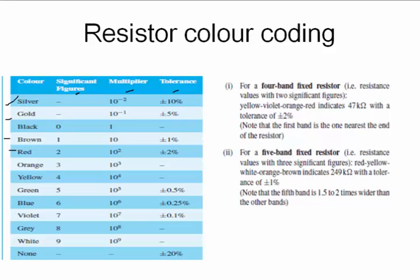If you have a 4 band resistor, yellow, violet, orange, red. Yellow stands for 4, violet stands for 7, so 47. Orange stands for 3. So multiplier is 10 to the power 3. That bit there. 47 into 10 to the power 3. And tolerance is red, which is plus or minus 2 percent. So it's 47 kilo ohms with a tolerance of plus or minus 2 percent.